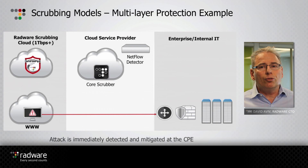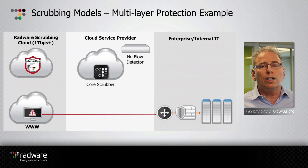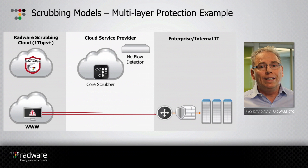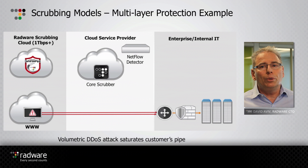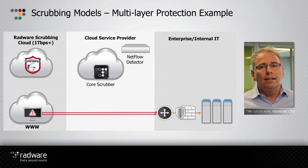You can see here a typical scrubbing center facility that hosts different customers — enterprises — and is part of the service provider infrastructure. When an attack is running on the network, a NetFlow detector will detect that attack, signal, and redirect the traffic into the scrubbing center. The scrubbing center utilizes our technology and solution algorithms to detect in real-time even the most ferocious attacks, then redirect the clean traffic back to the customer.